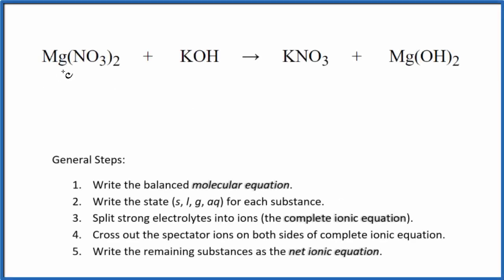To write the balanced net ionic equation for Mg(NO3)2 plus KOH—magnesium nitrate plus potassium hydroxide—first we need to balance the molecular equation. I can see that I have two nitrates here and just one here, so I'm going to put a 2 in front of the KNO3.